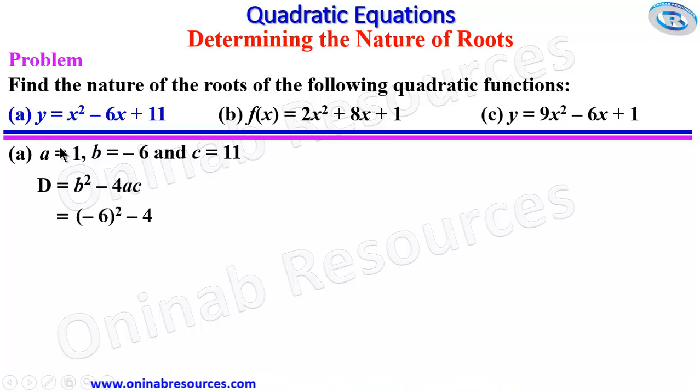(-6)² is 36, and 4 × 1 × 11 gives 44. So we have 36 - 44, and that gives -8.